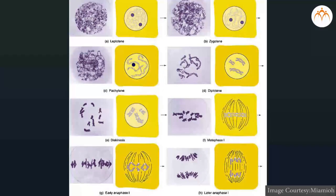Meiosis 1 is subdivided into prophase 1, metaphase 1, anaphase 1, and telophase 1. This is the longest and most important phase of meiosis and shows further sub-phases. Leptotene: a thin thread stage. Zygotene: pairing of homologous chromosomes to form bivalents. Pachytene: this is the crossing over stage and chiasmata are formed. Diplotene: separation of chromosomes after recombination. Diakinesis: separation of chromosomes is complete and nuclear membrane and nucleolus disappear.